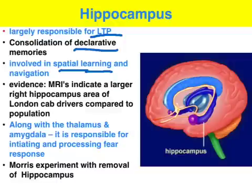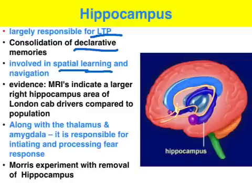Along with the thalamus and the amygdala, the hippocampus is responsible for initiating and processing the fear response. In another variation of the Morris Water Maze, mice who had their hippocampi removed showed no improvement in water maze performance — they were unable to establish long-term potentiation and repeatedly made the same errors. In contrast, a control group with intact hippocampi progressively improved, taking less time to escape the maze and making fewer errors.